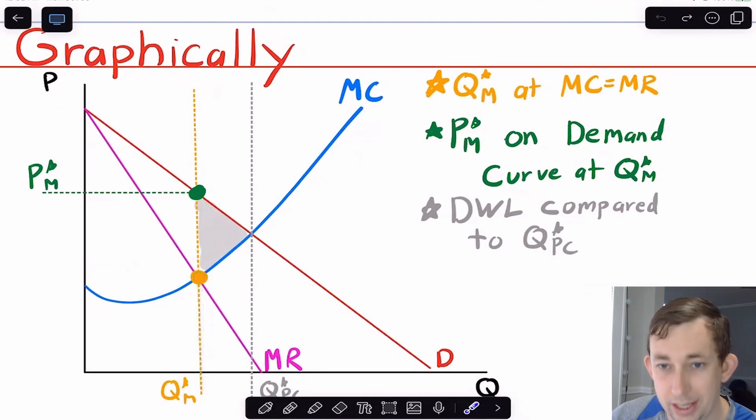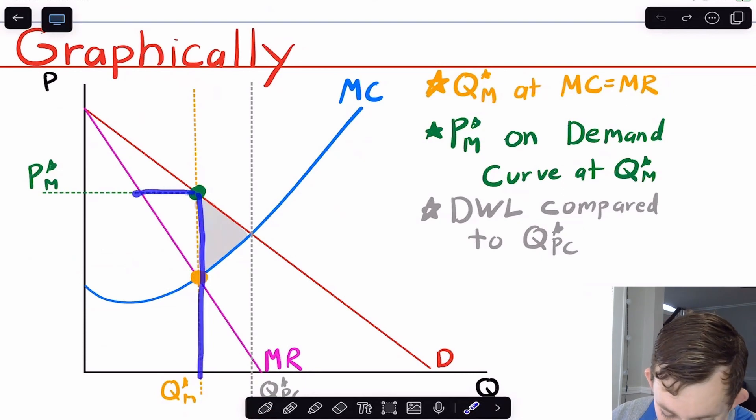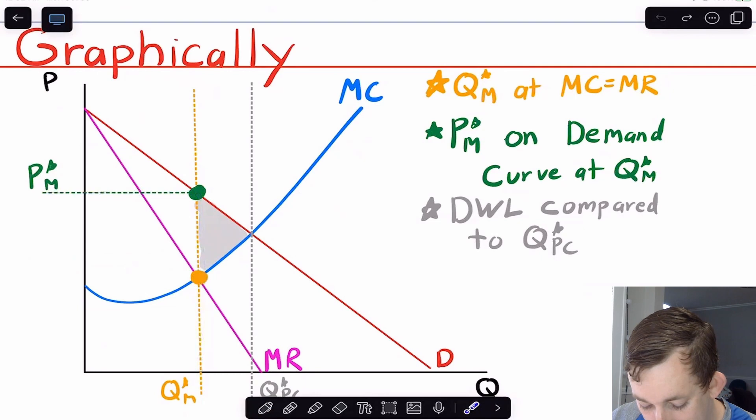That doesn't tell us the actual price we're going to charge. To find the actual price that we're going to charge in the market, we're going to follow this quantity all the way up to the demand curve. And we're going to go over to the price. And that's going to tell us the price the monopoly is going to charge.